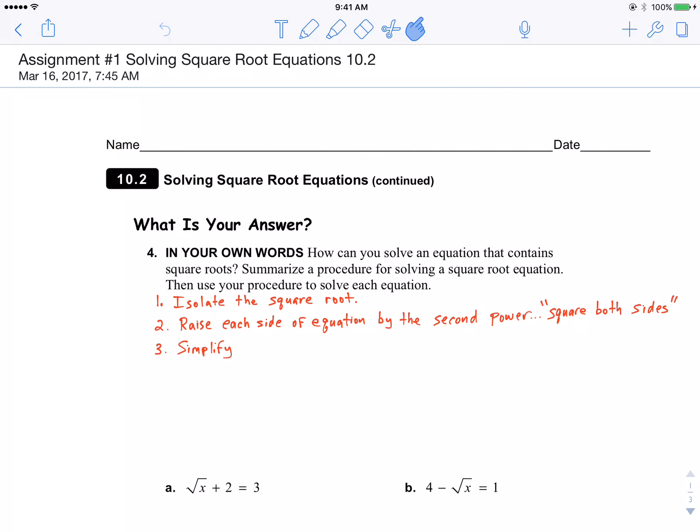So how do you solve an equation that contains a square root? Here are the steps. First, you want to isolate the square root, the expression with the square root. Then you want to raise each side of the equation by the second power—it's called squaring both sides. Then you simplify.